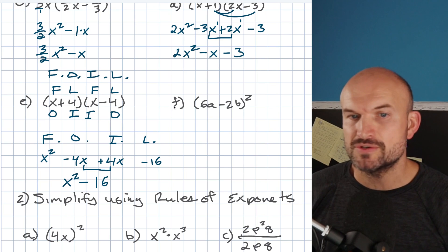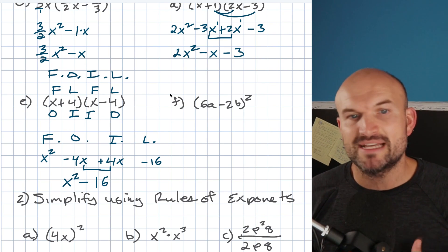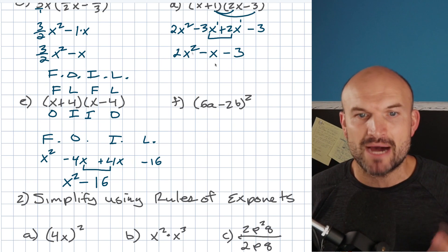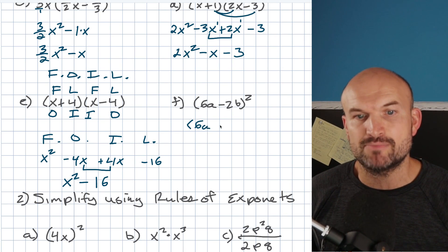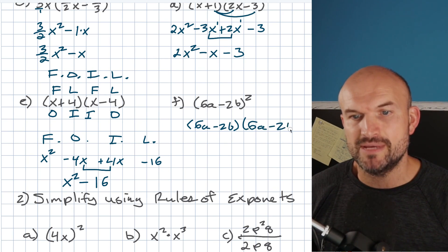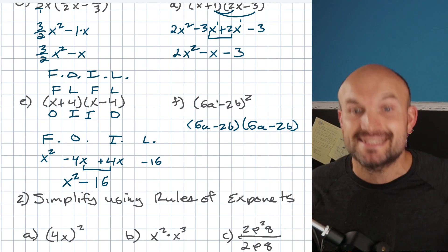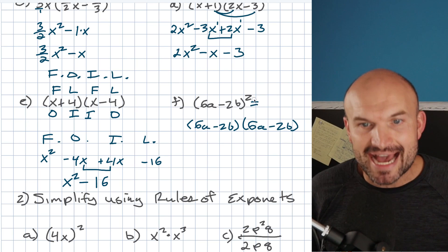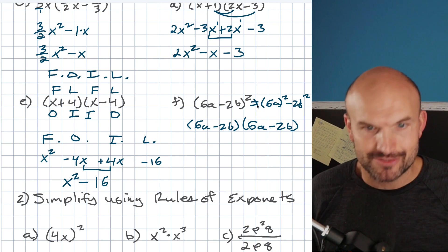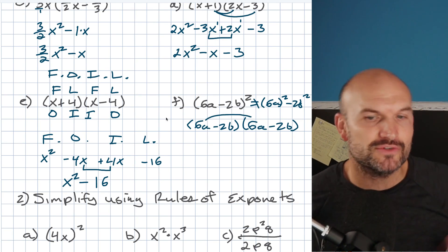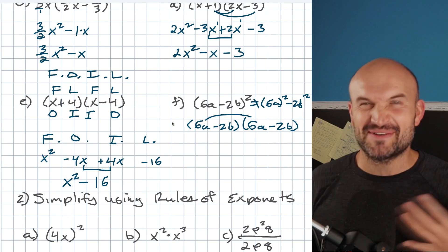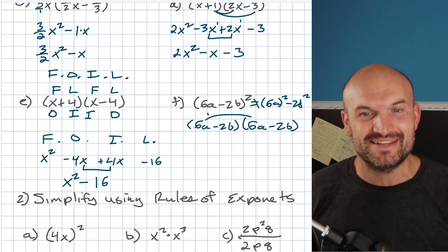This is a mistake students make from algebra one all the way through calculus. When they see something squared, they want to distribute the exponent. Don't do that. When we have an expression raised to the power of two, that means the expression is being multiplied by itself. So (6a − 2b)² is (6a − 2b) times (6a − 2b). Do not distribute to get 6a squared minus 2b squared — that is incorrect.